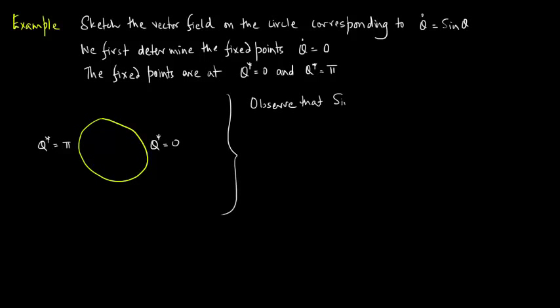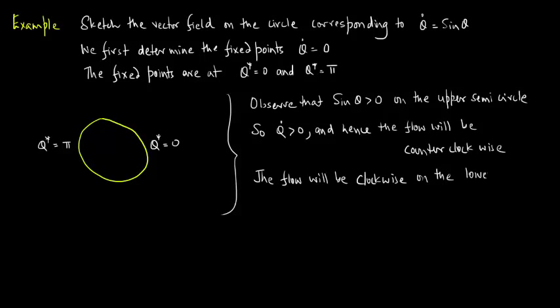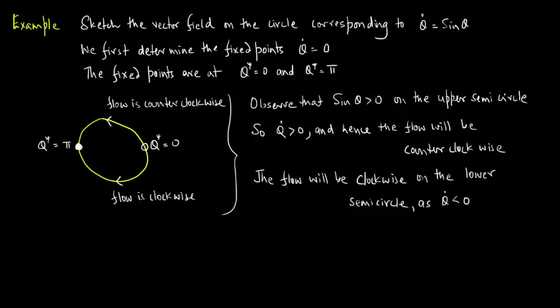Now, observe that sin(theta) is greater than zero on the upper semicircle, so theta-dot is greater than zero and hence the flow will be counter-clockwise. The flow will be clockwise on the lower semicircle as theta-dot is less than zero. So, the flow is counter-clockwise on the upper semicircle and clockwise on the lower semicircle. Highlighting the fixed points, one is unstable and the other is stable: theta-star equal to zero is unstable and theta-star equal to pi is stable.